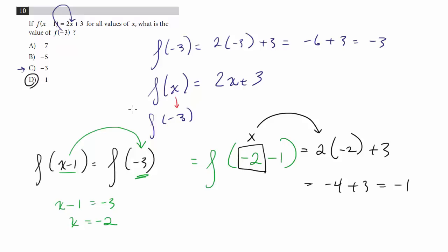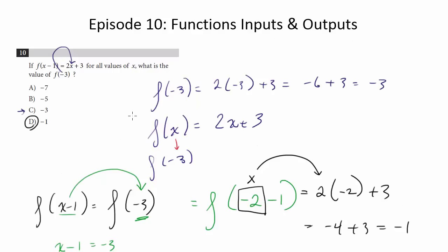So a little bit of a tricky question, but as always with these function questions, it's all about the input versus the output. Knowing what goes into the function, in this case what's going into the x in order to make this negative 3, and then whatever goes in for x, in this case negative 2, goes into the equation as well.